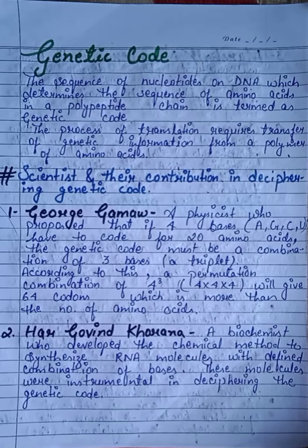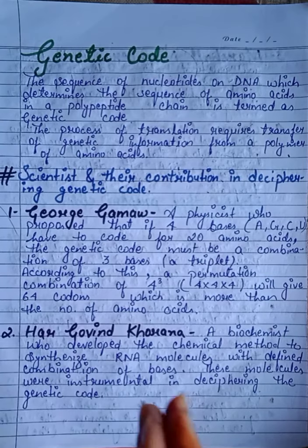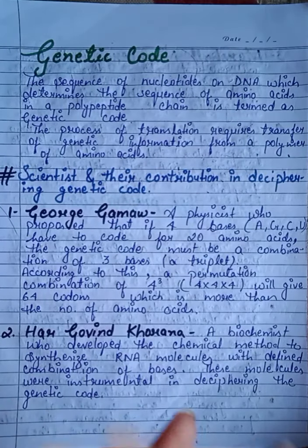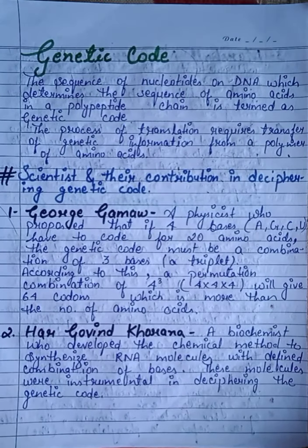Hello friends, we are doing the chapter Molecular Basis of Inheritance. In the last video, that means part 4 of this chapter, we have discussed the process of transcription in prokaryotes and eukaryotes, types of RNA, and structure of a gene. Today we will start genetic code. If you have not seen part 1, 2, 3, and 4 of this chapter, you will get the link in the description box.